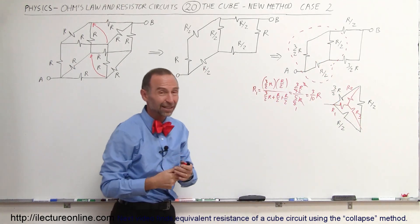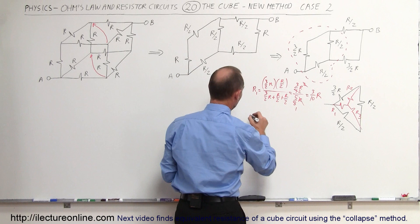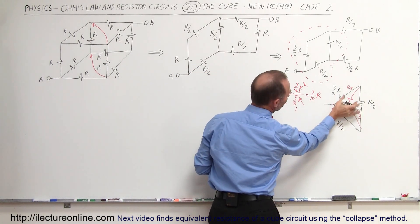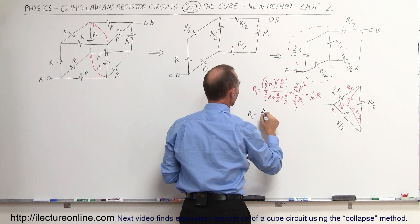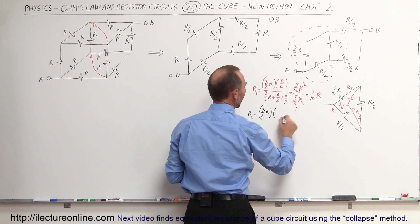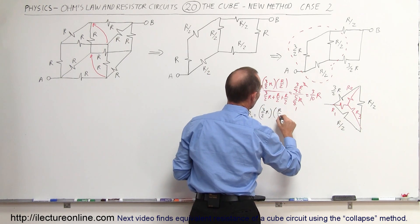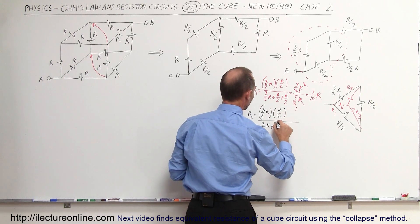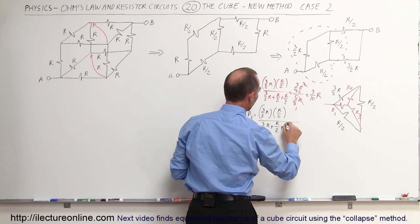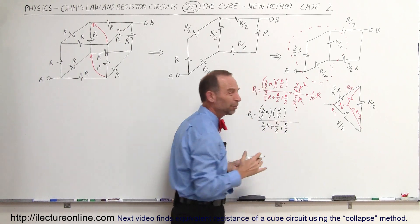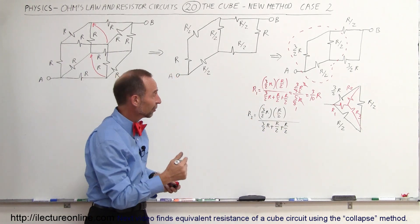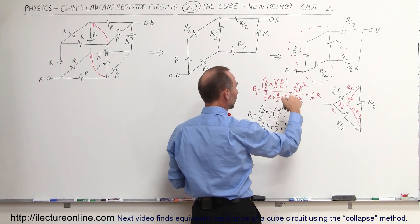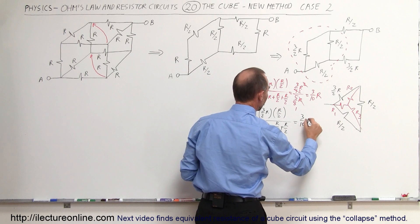We can change all three resistors from this delta circuit to a Y circuit using this same technique. For R2, that equals the product of its two adjacent resistors, which is 3/2 R times R/2, divided by the sum of the three resistors: 3/2 R + R/2 + R/2. The denominator is always the same for all three equivalent resistors, and notice that is exactly the same as before, so R2 is also 3/10 R.